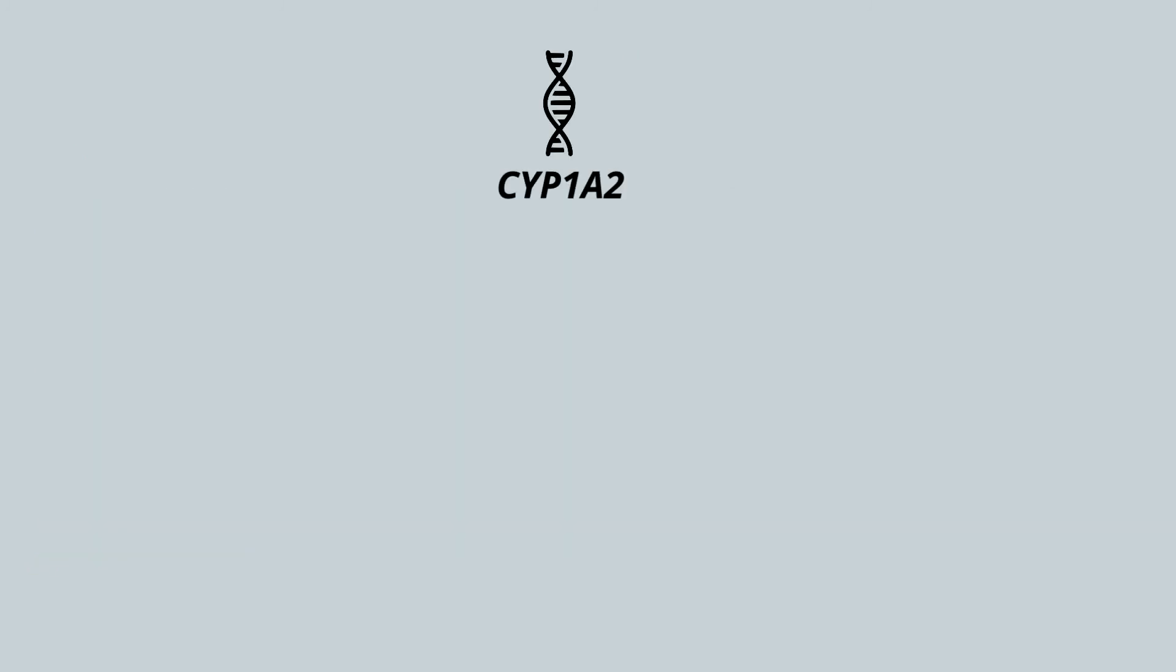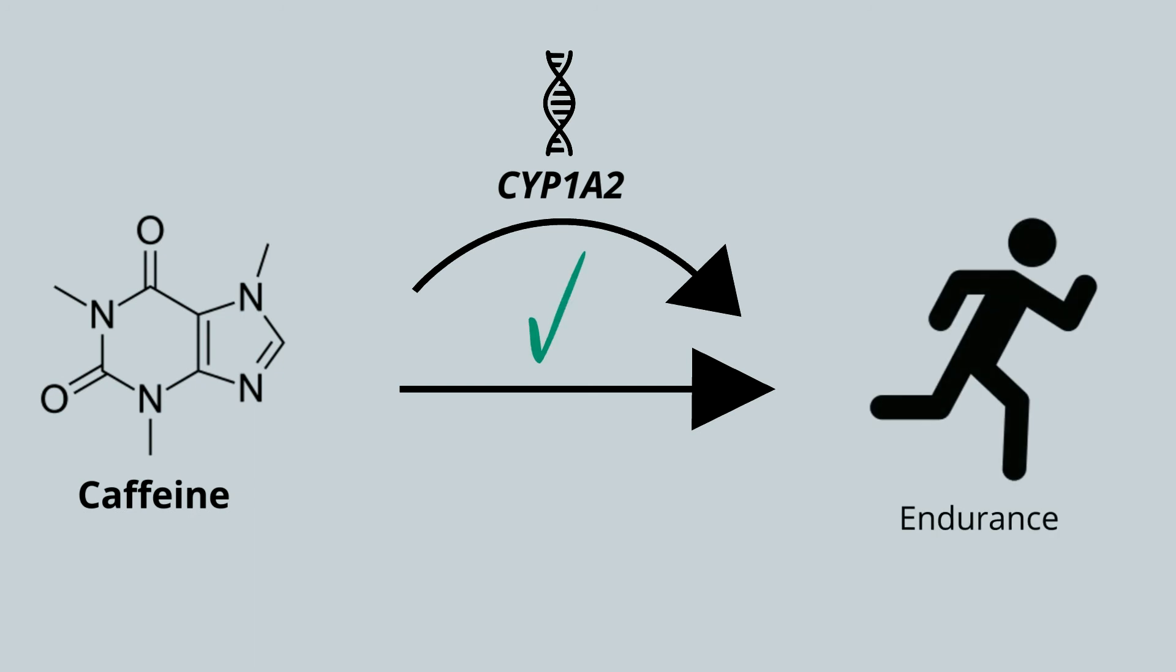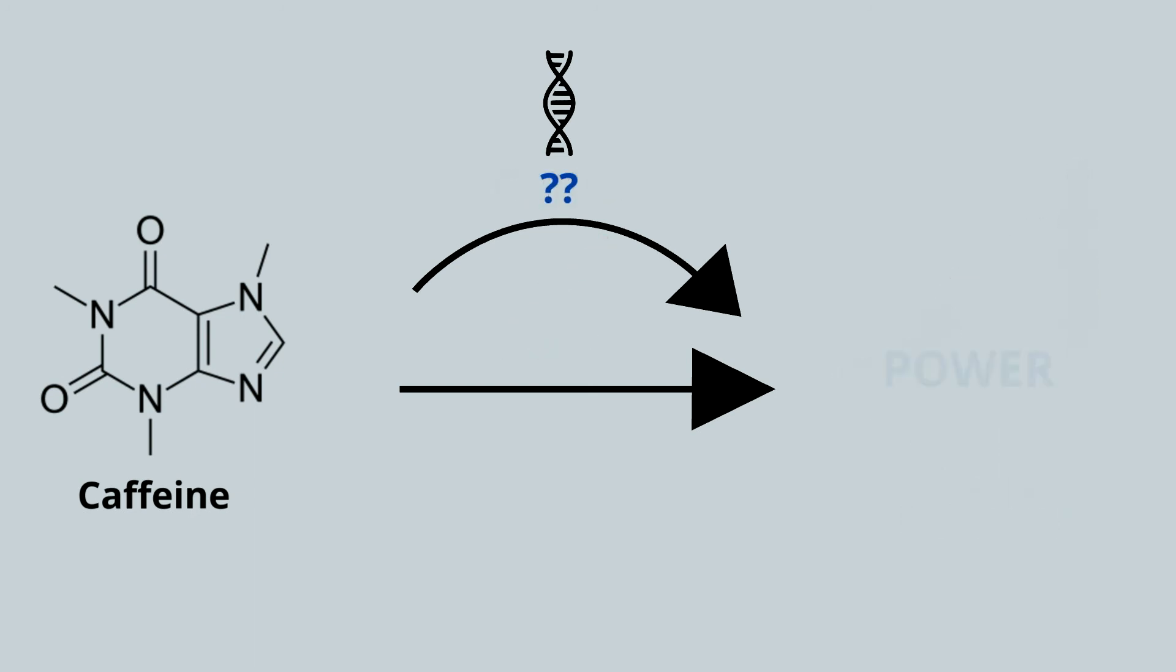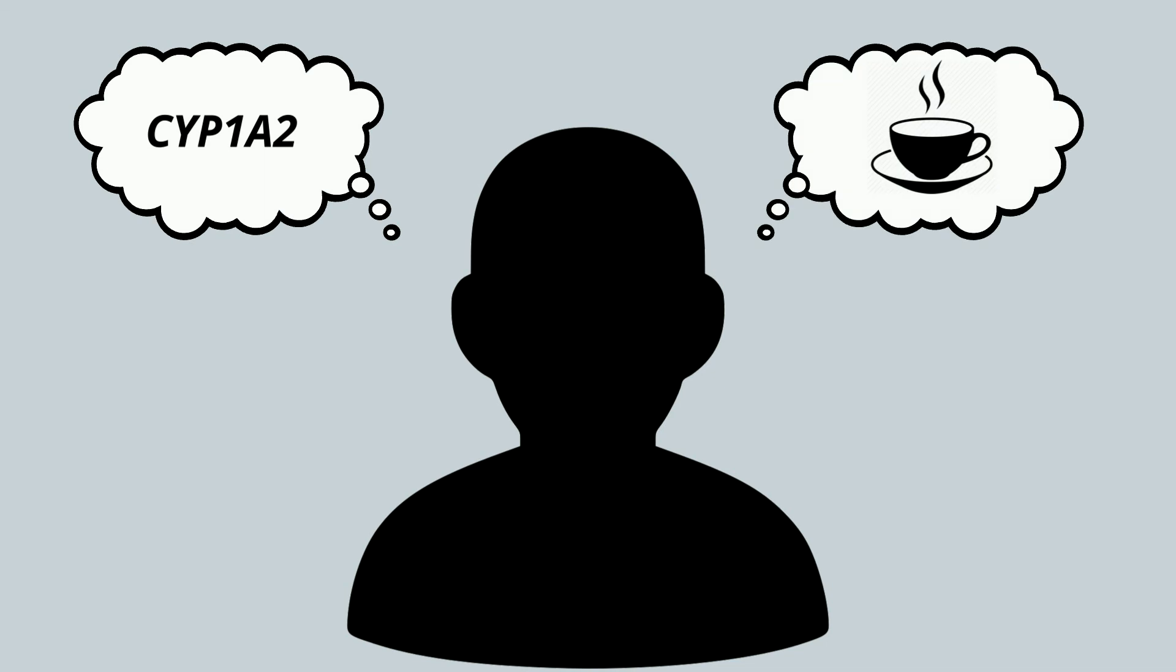Although CYP1A2 has been shown to modify caffeine's effects on endurance performance, it does not appear to modify its effects on power performance. It's unknown if other genes influence caffeine's effects on other power performance parameters. Awareness of CYP1A2 genotype may thus not be as important for power-based athletes consuming caffeine compared to endurance-based.